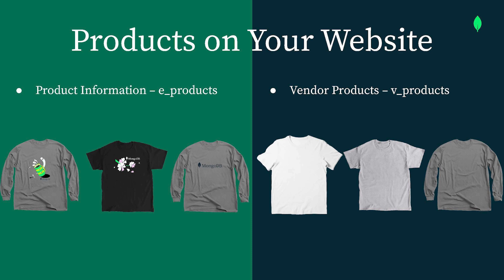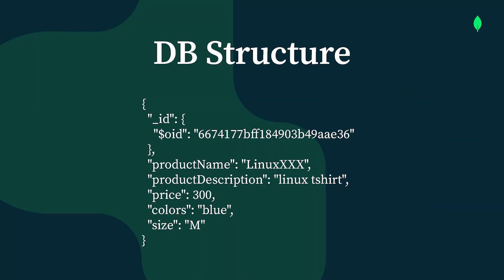So if a vendor is adding a new product and you want it present in e_products in real time, you need something like a streaming application. We'll use Change Stream for that implementation — in real time, if there is any new product added to v_products, on the basis of certain conditions, we will add it to e_products. Let's say the vendor provides t-shirts of different technologies: Linux t-shirts, MongoDB t-shirts, Java t-shirts — but you specifically want to sell only Mongo t-shirts on your website. So whenever the vendor adds a MongoDB t-shirt, we want it added to e_products. The document structure has underscore ID as the key, along with product name, product description, price, color, and size.